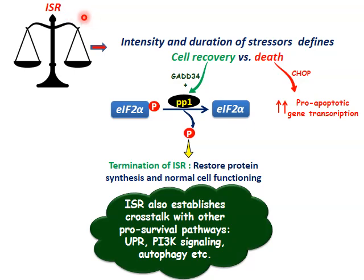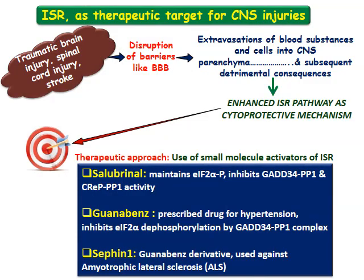ISR is not exclusive to other specific cellular stress responses. In fact, ISR can establish crosstalk with other pro-survival pathways like UPR, PI3K signaling, and autophagy. Modulation of the ISR pathway has been approached for several therapeutics.